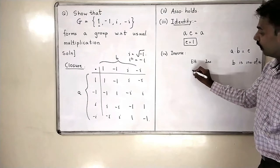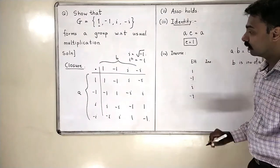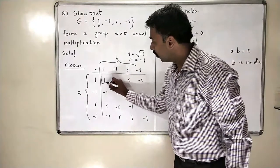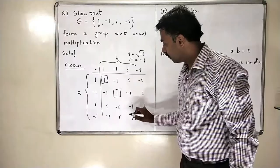The elements are 1, minus 1, i, minus i. I will go back to the table. Square all the identities. Square these are the identities.